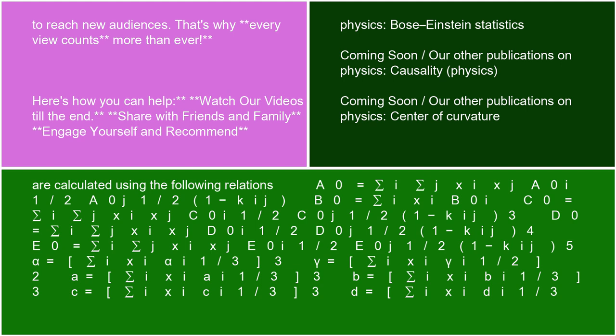A₀ = Σᵢ Σⱼ xᵢxⱼ A₀ᵢ^(1/2) A₀ⱼ^(1/2)(1-Kᵢⱼ); B₀ = Σᵢ xᵢB₀ᵢ; C₀ = Σᵢ Σⱼ xᵢxⱼ C₀ᵢ^(1/2) C₀ⱼ^(1/2)(1-Kᵢⱼ).